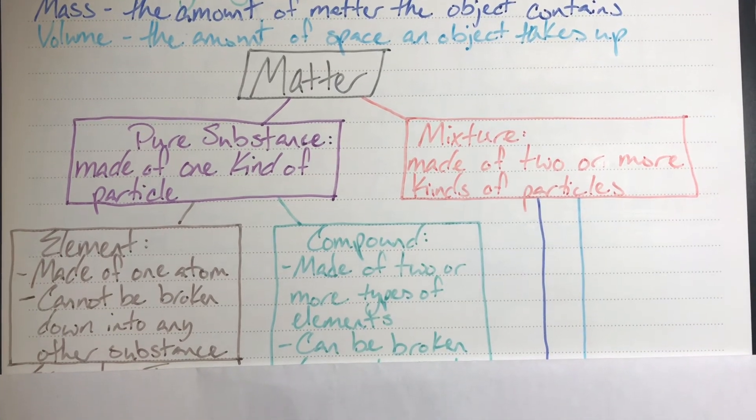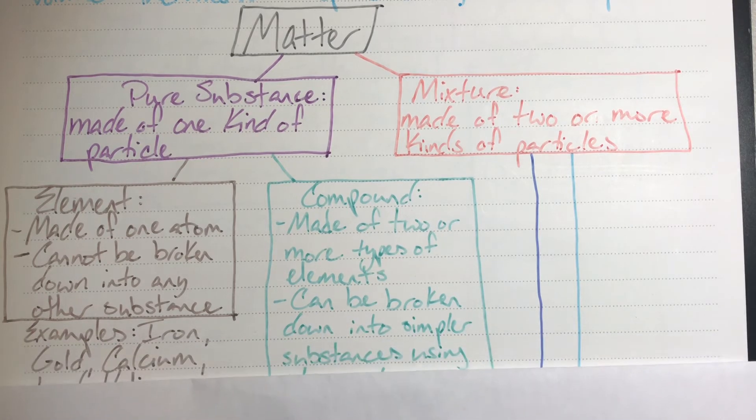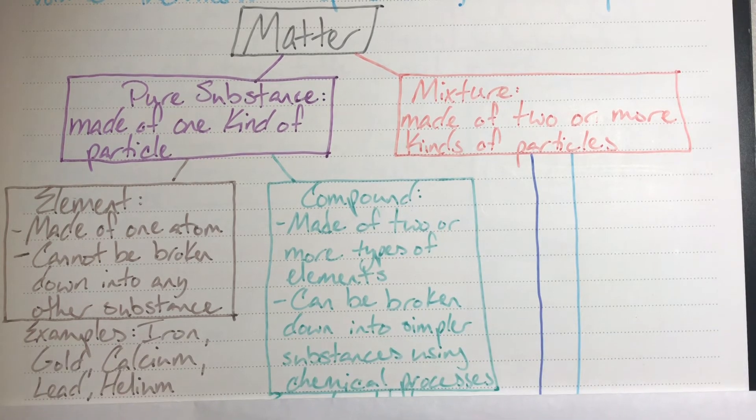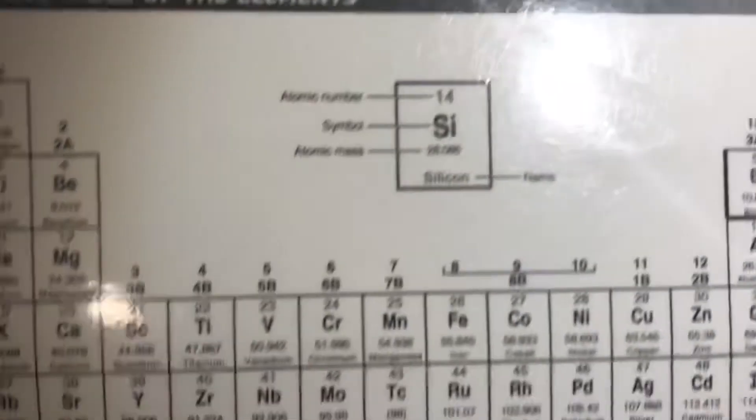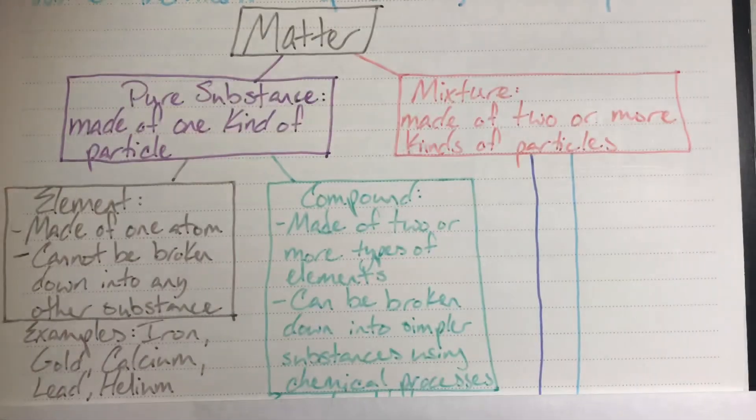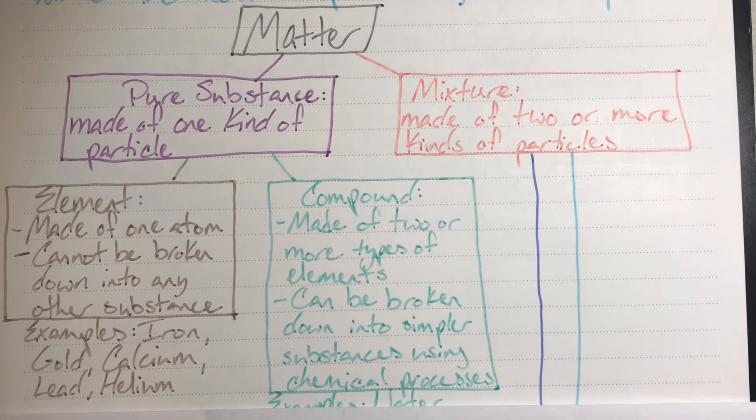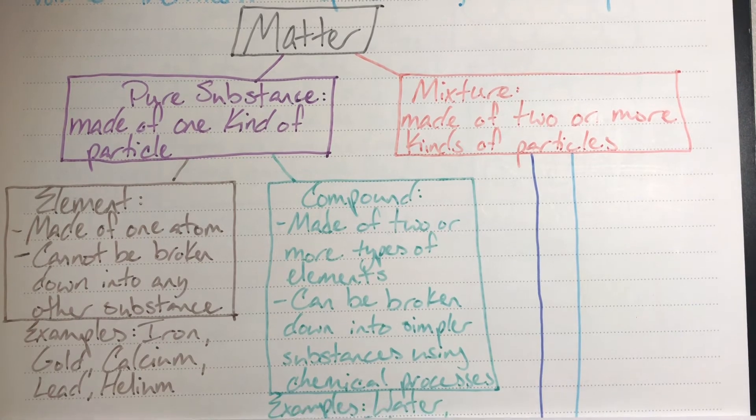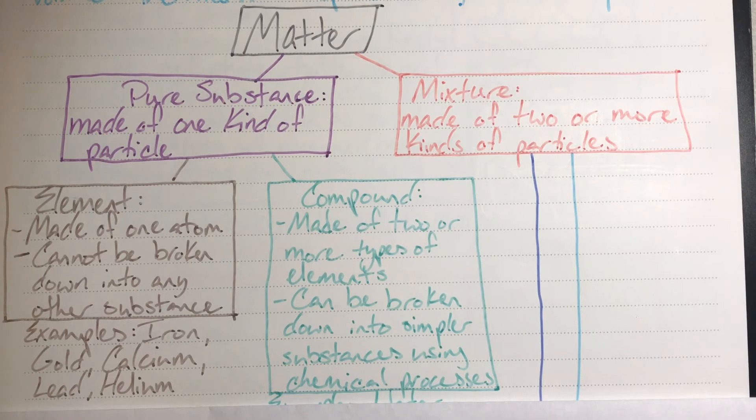A compound can be broken down into a simpler substance using chemical processes. Examples of elements are things that you are going to find on a periodic table. If you can find it on the periodic table it is an element, it is a pure substance. Examples include but are not limited to iron, gold, calcium, lead, and helium.